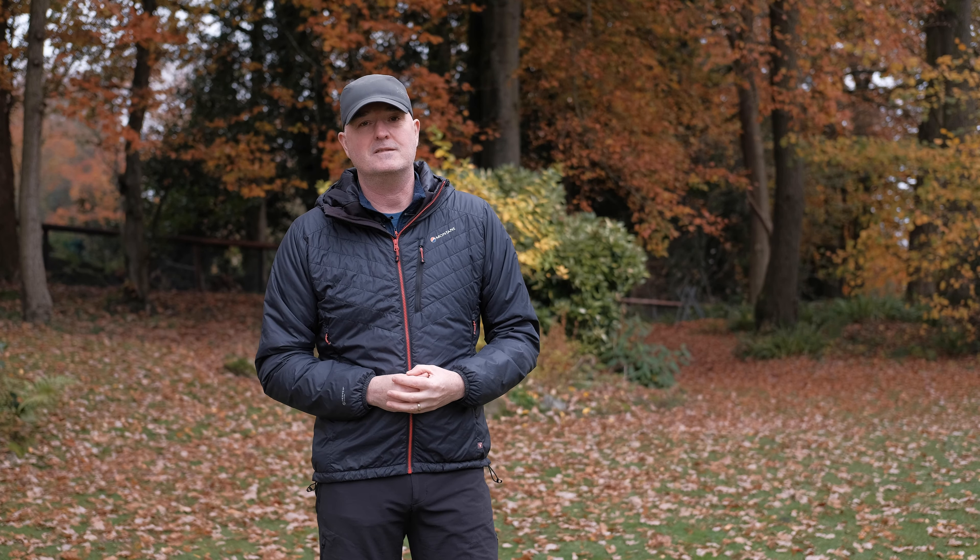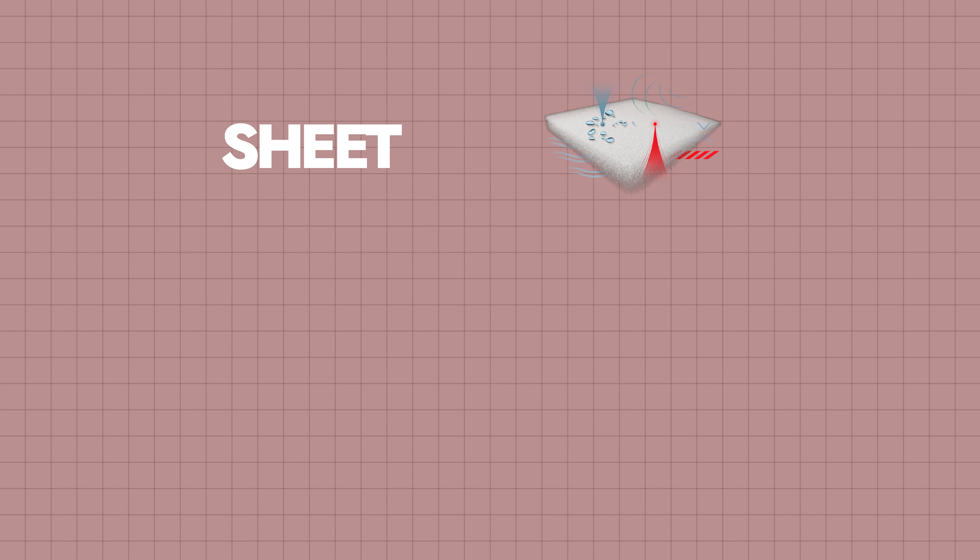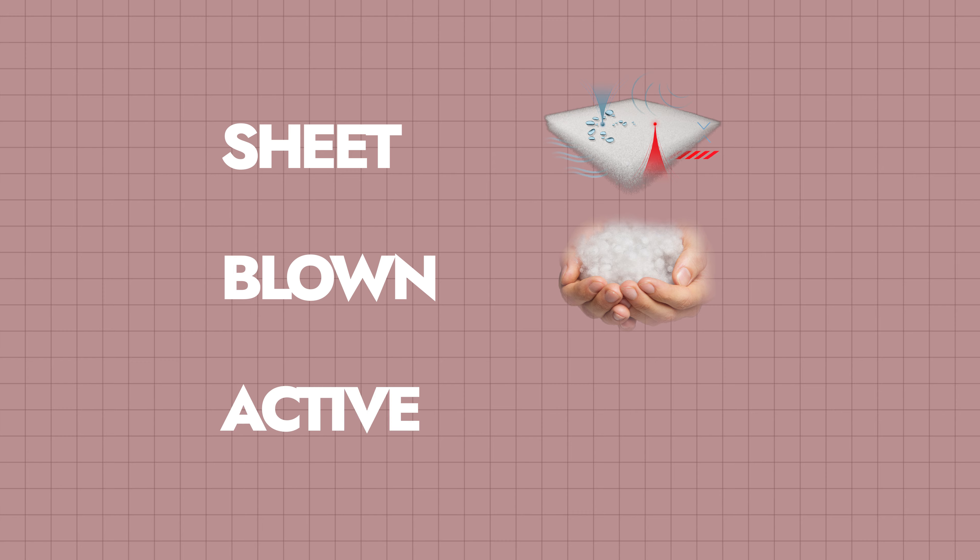We aim to give you some insight, advice, and information to make it easier to choose the right product for your intended activity. The three different types available are: sheet insulation, blown insulation, and active or breathable insulation. They all aim to do exactly the same thing — trap air within the garment to keep you warm — but they all work in slightly different ways, which is what we're going to go through.